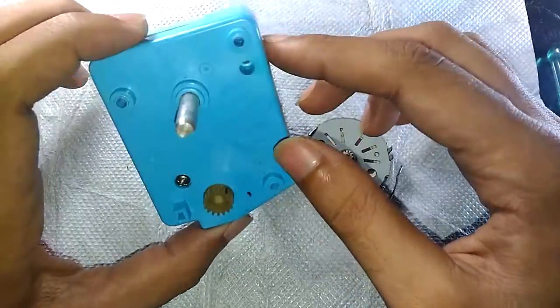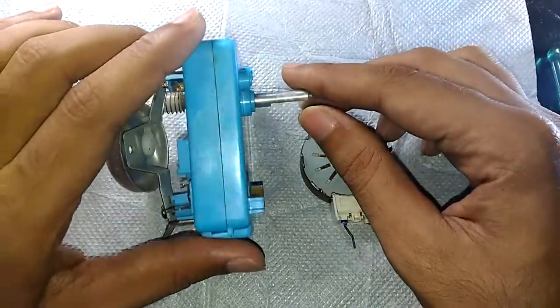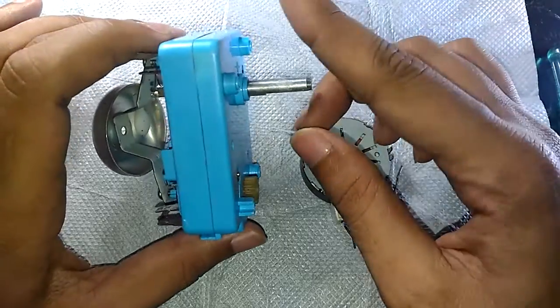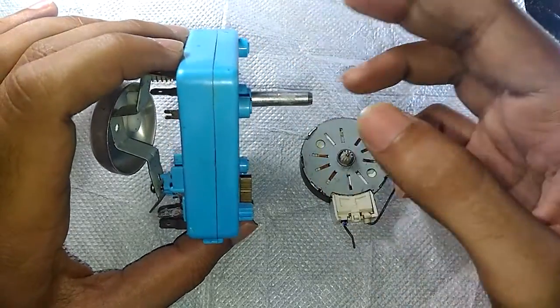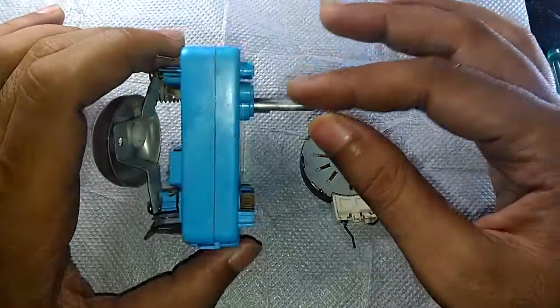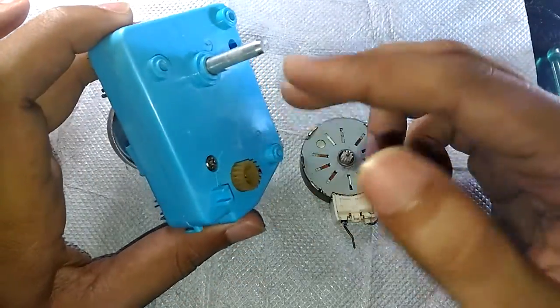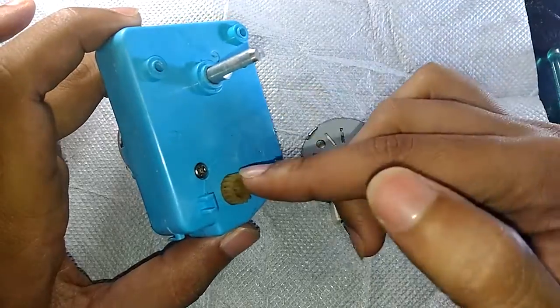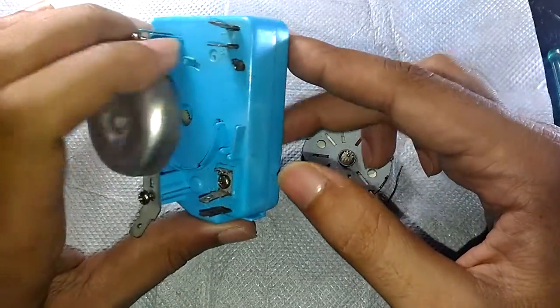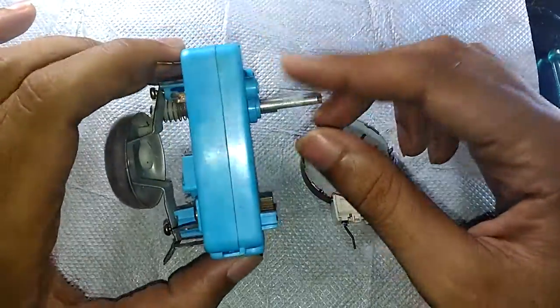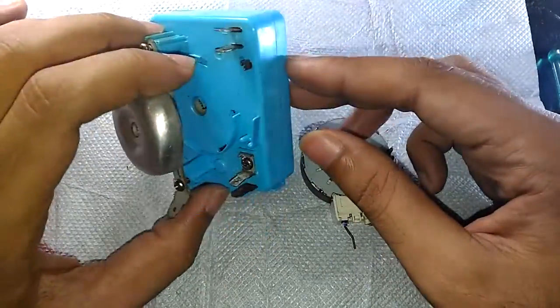So what this thing actually does: this is the thing that controls your microwave. When it times up, this thing turns off your microwave. When the actual proper temperature is set, the temperature thermostat will be controlled by this thing. Basically, this is what starts and stops your microwave.